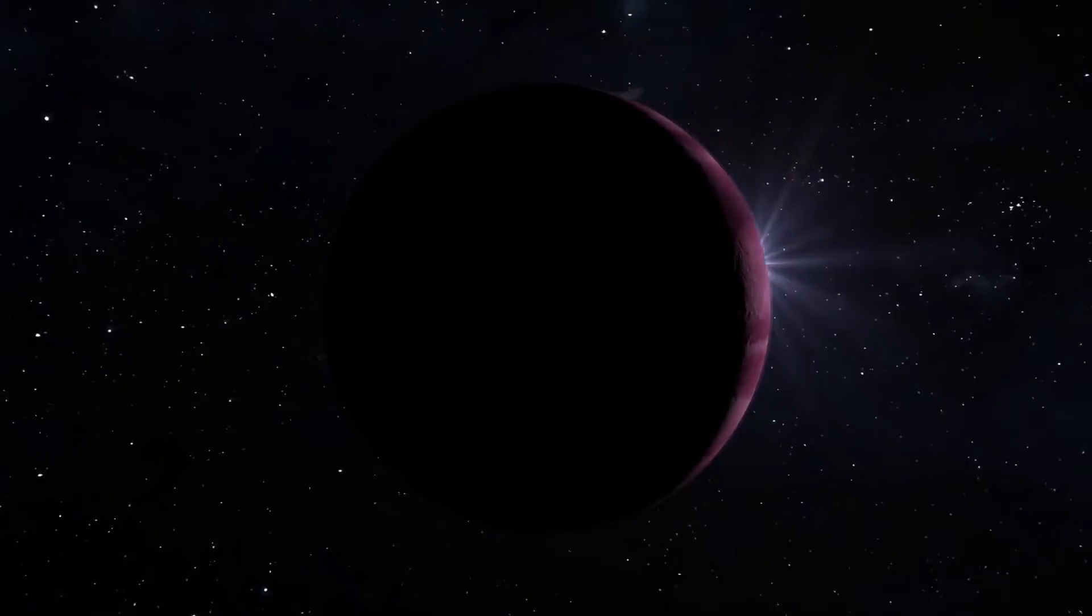After the ignition of the sun, a powerful solar wind cleared off all the gas and dust from the system. As a result of this, some rocky debris remained and that came to be known as the asteroids.